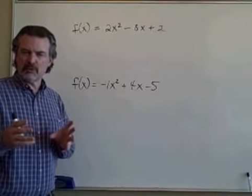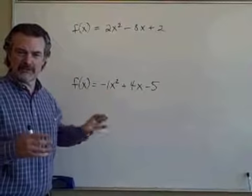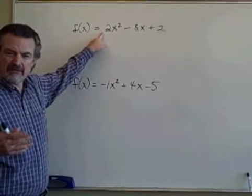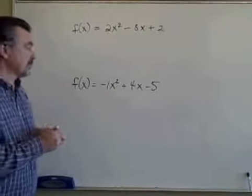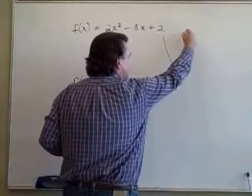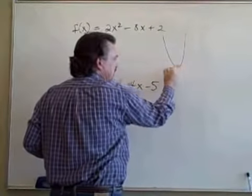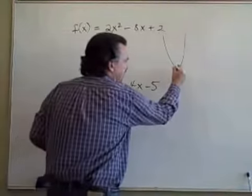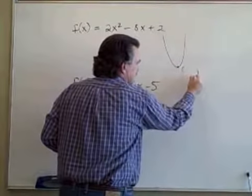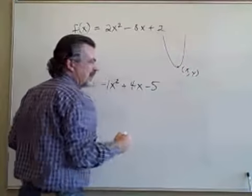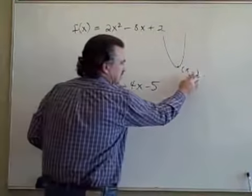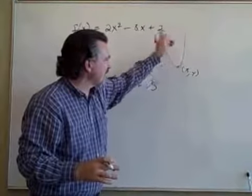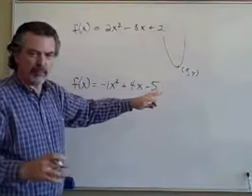Remember, the vertex is the turning point of the parabola associated with the quadratic function. When the coefficient of the squared term is positive, that's a parabola that opens up — it has a U shape — and the vertex is that low spot, the turning point. That point has an xy ordered pair value, and it's where the y value is the lowest, because on either side the y value is higher. So that's the low point.